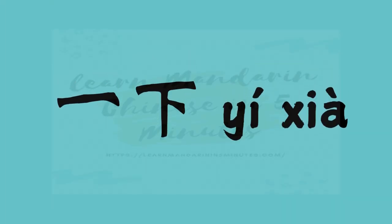Another super useful phrase to use and to remember is 一下. 一下 can be added after almost any verb to soften the tone or to indicate a brief action. It's a very versatile and polite way to speak in Chinese, especially in requests and invitations.